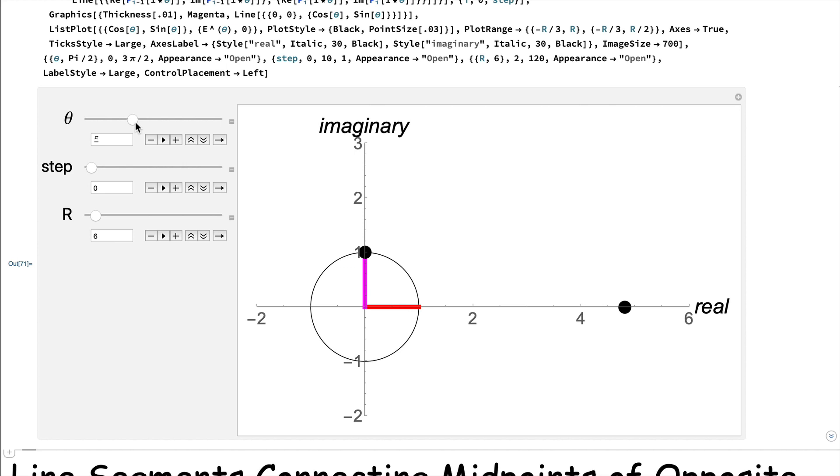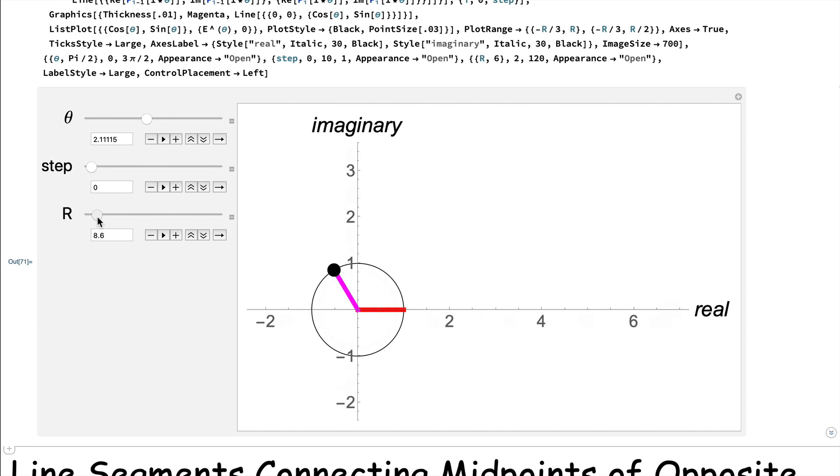I can change the final angle if I like. I can also increase r, which is the viewing window, and I can step up through the values of the series, both the real series for e to the theta, and the complex series for e to the i theta. I see that e to the i theta is always on the unit circle, no matter what theta is.